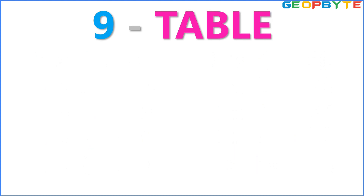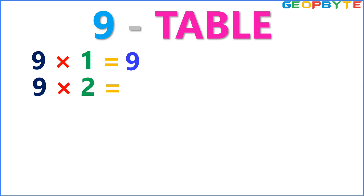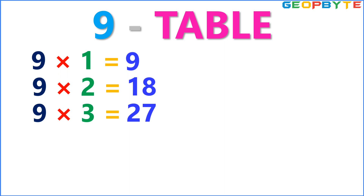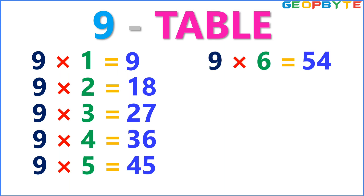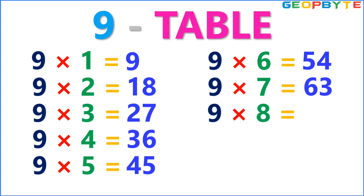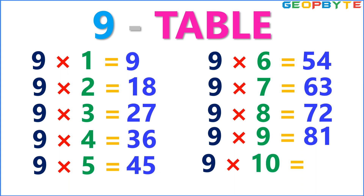Now let us see the 9 table. 9 1s are 9. 9 2s are 18. 9 3s are 27. 9 4s are 36. 9 5s are 45. 9 6s are 54. 9 7s are 63. 9 8s are 72. 9 9s are 81. 9 10s are 90.